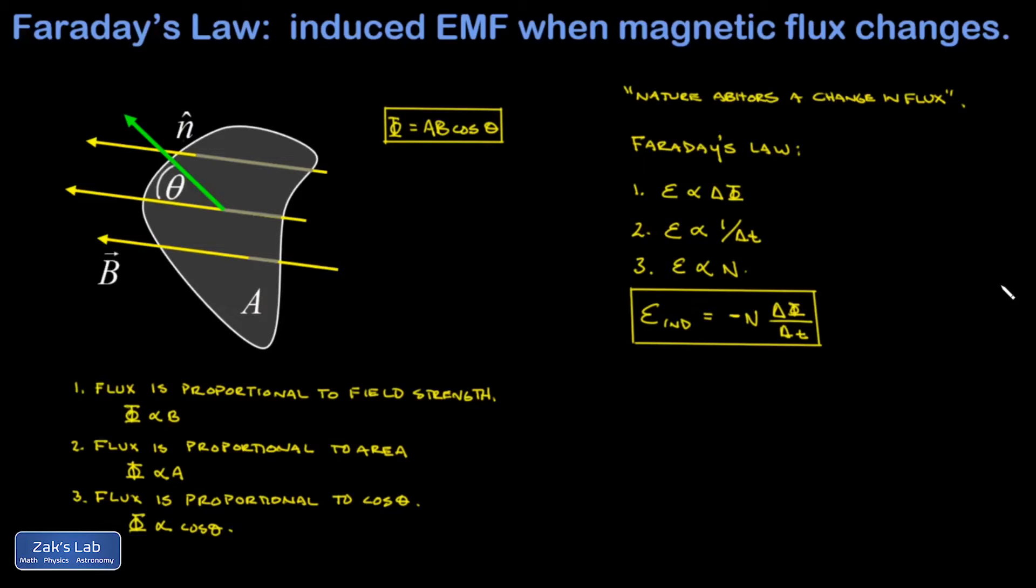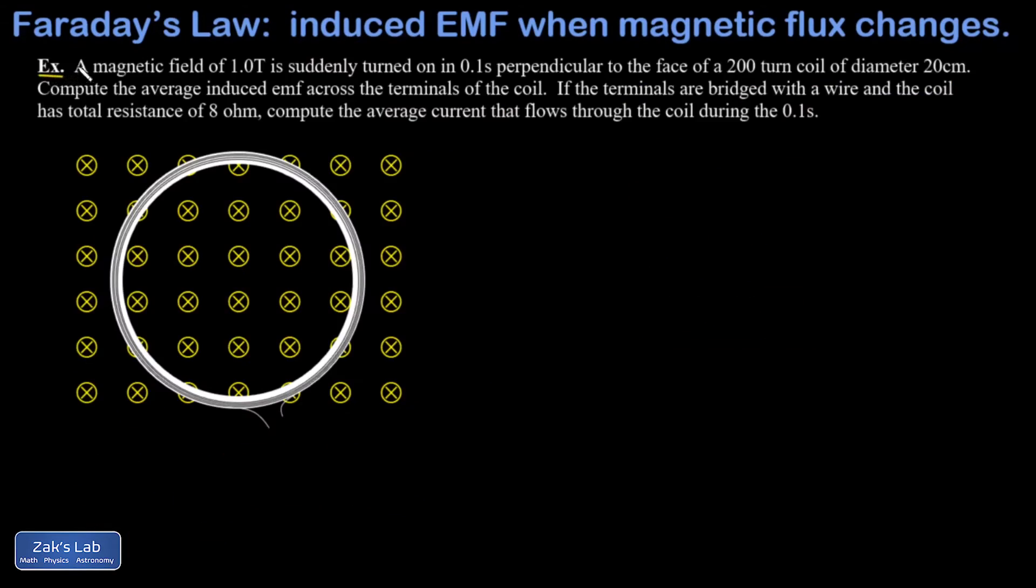Okay, so now we know how to calculate magnetic flux, and we know how to calculate the induced EMF if we change the flux through a loop. Let's wrap things up with a simple example. So in this example, I have a coil of wire that has actually 200 turns in it, and I have the wire disconnected at its ends. So these I refer to in the problem as the terminals of the coil.